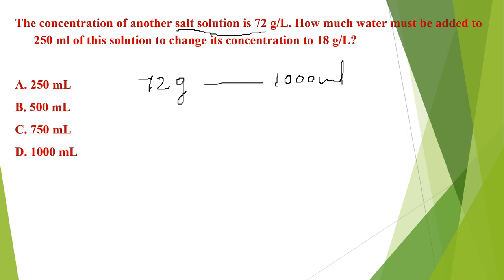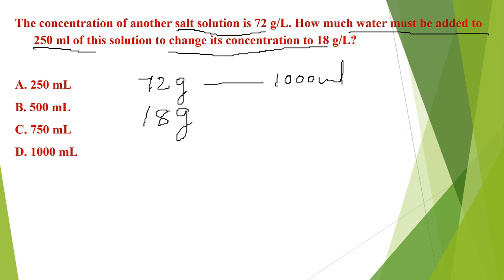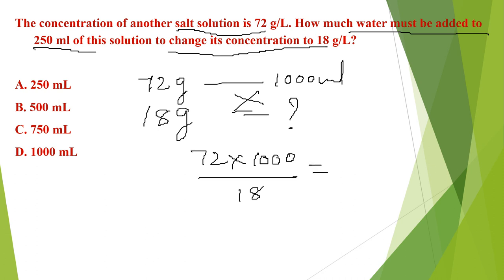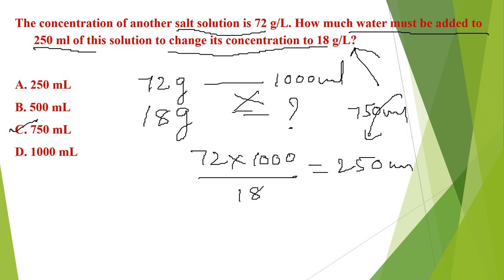Similarly, next question: the concentration of another salt solution is 72 grams per 1000 ml. How much water must be added to 250 ml of the solution to change the concentration to 18 grams per liter? If 18 grams per liter, then: 72 into 1000 divided by 18 gives 4000 ml total volume needed. So 4000 minus 250 means 750 ml of water must be added to make up to 1000 ml. Answer is C. These questions are from ANCQ.